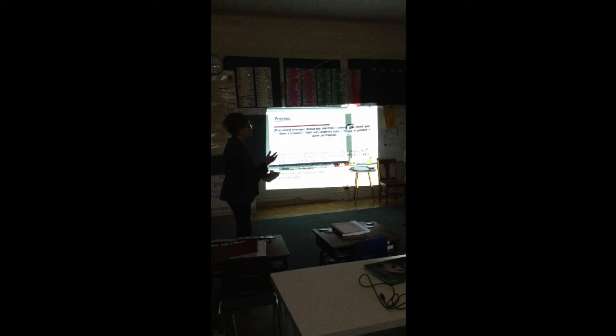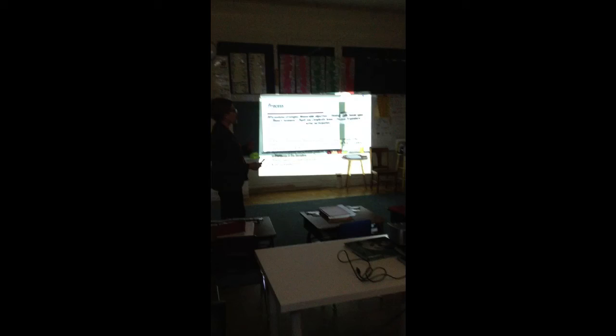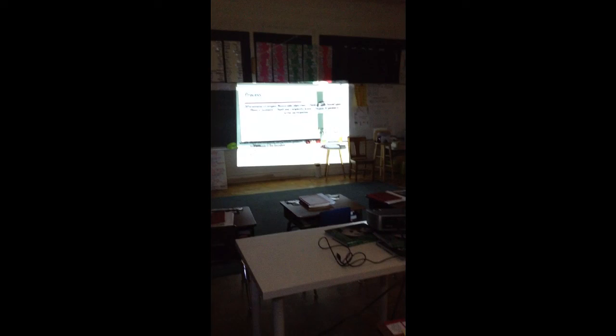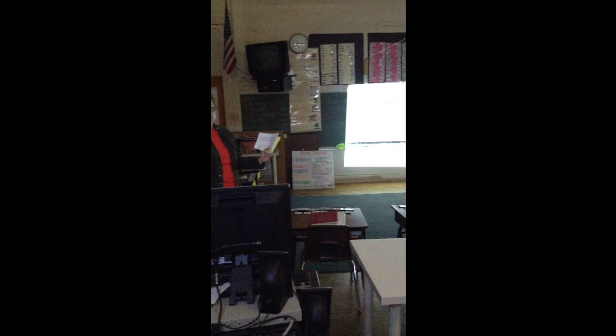I also needed to differentiate the process — the how of what's going to be differentiated. One of the ways I did it involves differentiating strategies. I use this formula: measurable objectives, plus thinking skills based upon Bloom's taxonomy, plus depth and complexity icons, plus thinking organizers, and active participation. I use that formula, and that's also one of my teaching practices here.